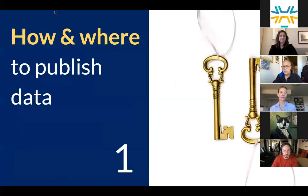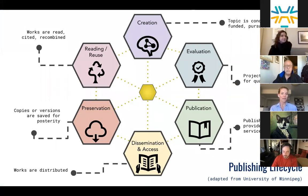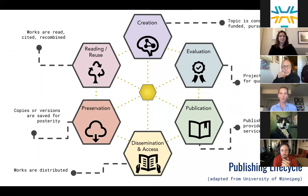I'm going to talk a little bit about how and where we can publish our data. The first key to data publishing success is really understanding these two items — how and where we're going to do it. To explore that, we are going to orient data in the knowledge creation lifecycle. I really like this lifecycle because it gives a very complete picture of the creation process all the way to reuse.